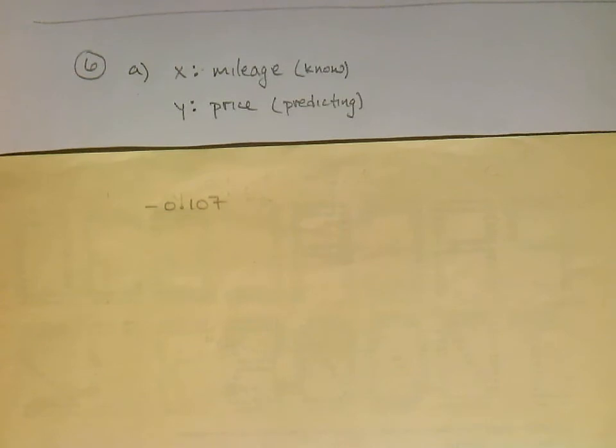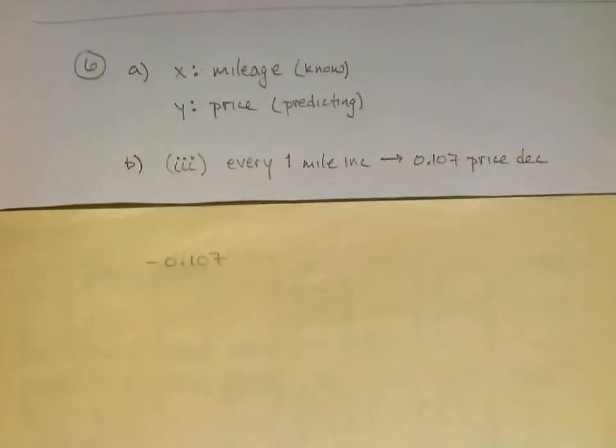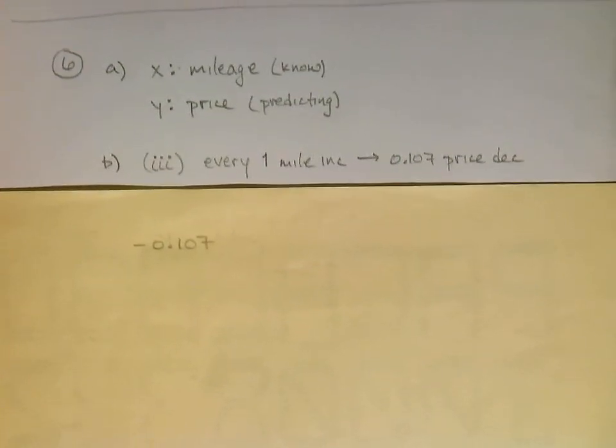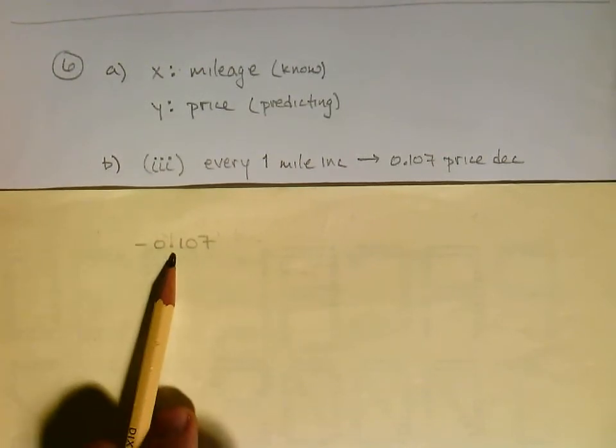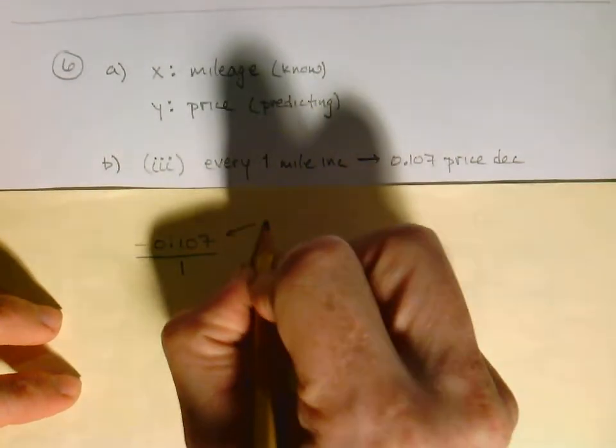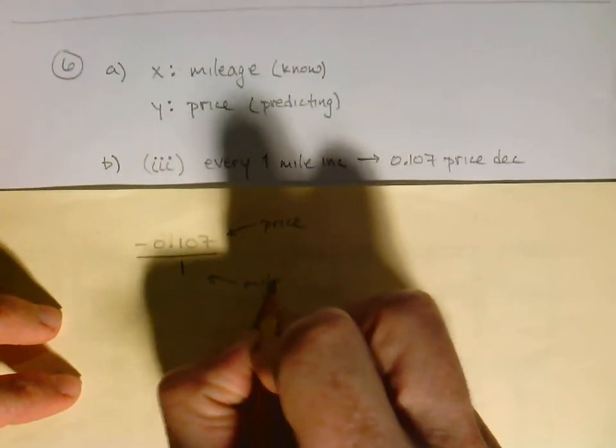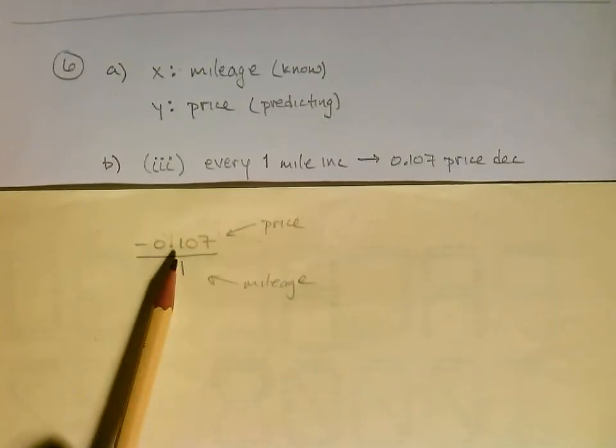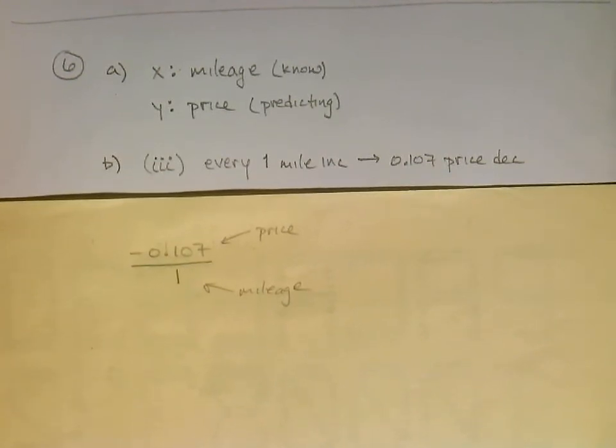Let's read three. For every one mile increase in the mileage, there is a $0.107 decrease in the price, and that's got to be it right there. If we note the slope, think of that as over one. This is talking about the price. This is the mileage. So, for every one mile increase, the price drops by .107. That's option number three. Let's read four just to finish it off. For every $1 increase in price, there is a .107 mile decrease. Well, that's got the two reversed. If I increase the price, then the mileage decreases. No, that's not going to happen.